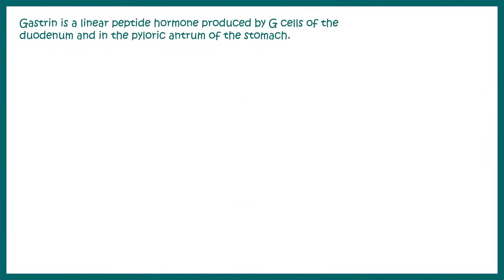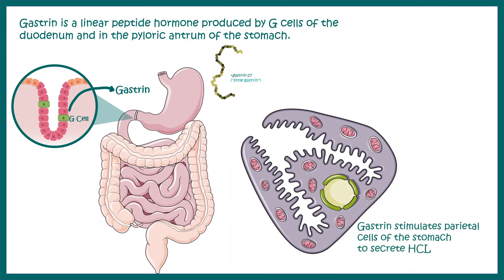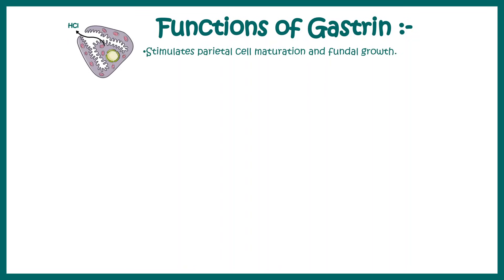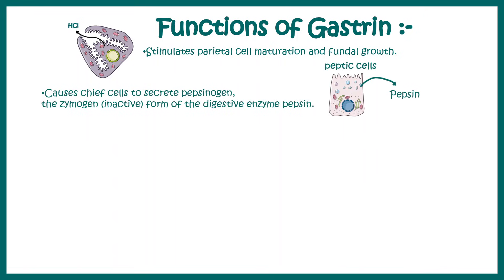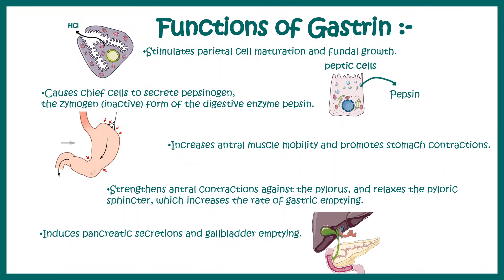Gastrin is a local hormone that is secreted and stimulates cells to secrete gastric HCl. Gastrin is secreted by G cells present in the duodenum or in the pyloric antrum. Along with gastrin, histamine can also stimulate these cells for HCl secretion. Overall, gastrin stimulates parietal cells and aids in the growth and maturation of those parietal cells. It causes chief cells to secrete pepsinogen, increases antral muscle motility promoting stomach contraction, and thereby helps in gastric emptying. It also modulates pancreatic secretion and gallbladder emptying.